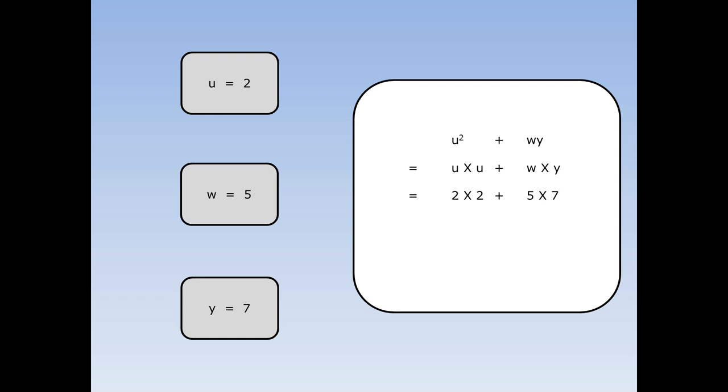We can swap the u's for 2s, swap the w for a 5 and swap the y for a 7. 2 times 2 is 4, 5 times 7 is 35. 4 plus 35 is 39. u squared plus wy is 39.